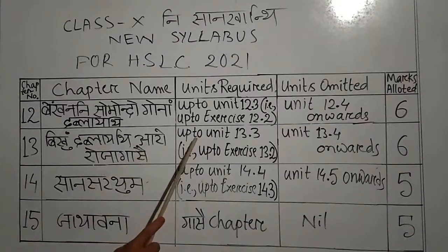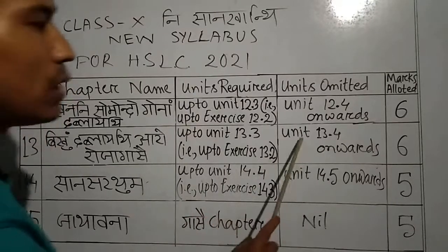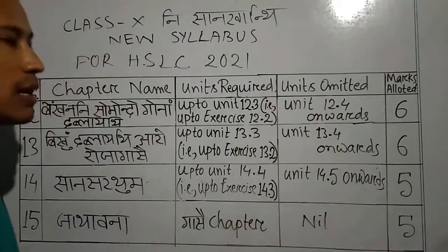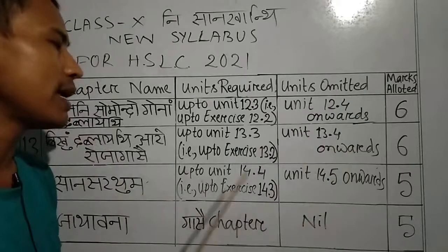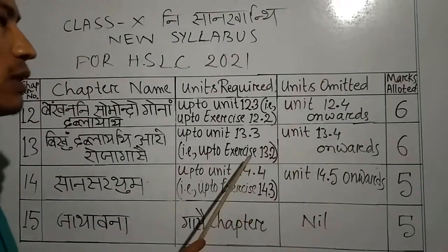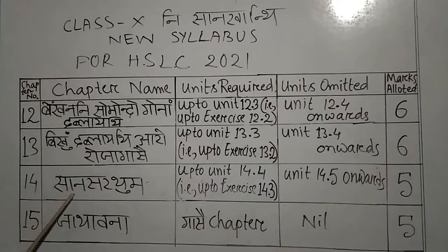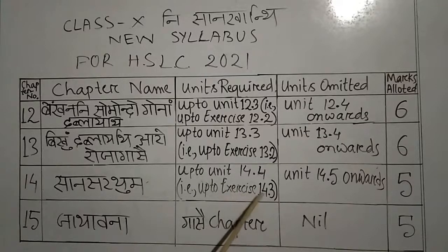The unit is 13.3. If you have 9 to exercise 13.2, the unit is 13.4 onwards. The unit is 13.4. If you have a unit, the unit is 13.2. The unit is 12.2, 13.4. If you have a unit, the unit is 14.4. The unit is 14.3.